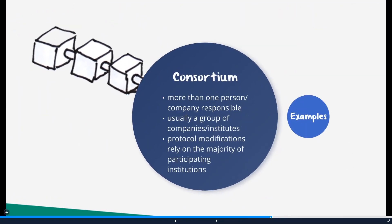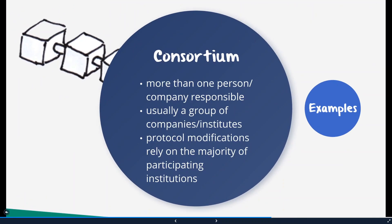Last but not least, we have consortium blockchains. This blockchain type is an extension of the private blockchain — it attempts to remove the sole autonomy of the private blockchain. This means that more than one person or company is responsible for the network. Basically, a group of companies or representative persons come together and make decisions for the best use of the whole network. Such groups are also called consortia or federations, from where the name is derived.